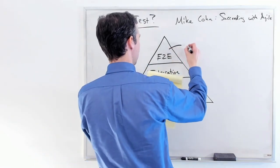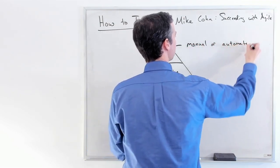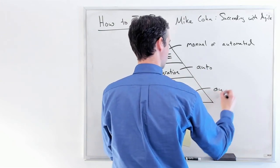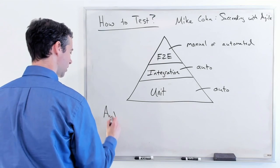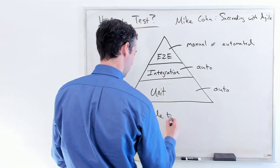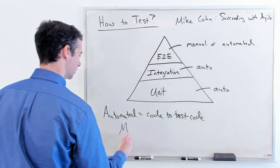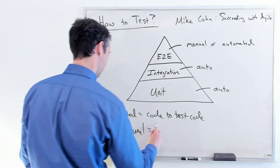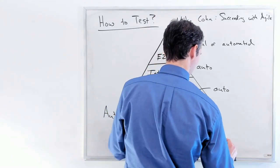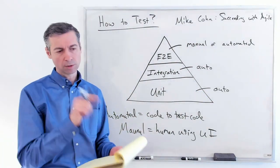For end-to-end testing, tests can be manual or automated. Integration tests and unit tests are always automated. Automated means you write code to test code. Manual means you have a human using the user interface, clicking buttons and links, and verifying whether things work or not.